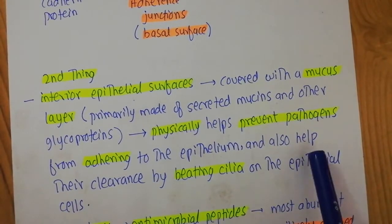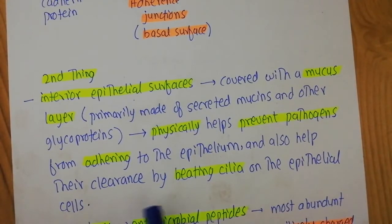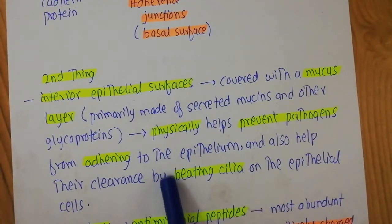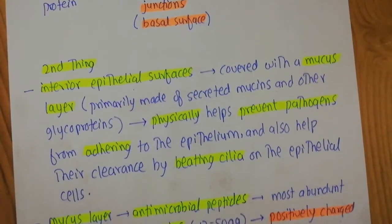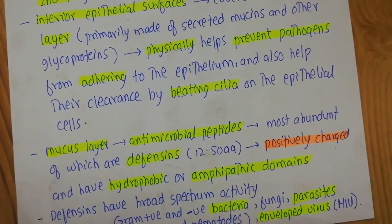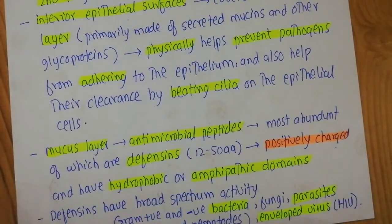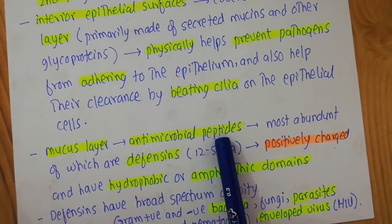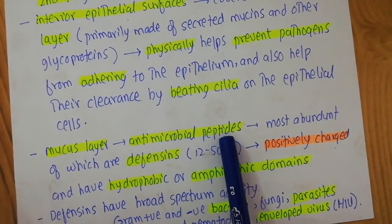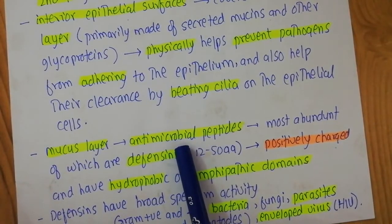The mucous layer also helps the clearance of pathogens by beating cilia on the epithelial cells — these beating cilia are responsible for clearing pathogens from the epithelial surface. The mucous layer also contains antimicrobial peptides. As the name indicates, these are small peptides with antimicrobial properties.